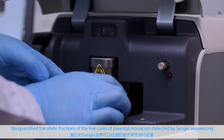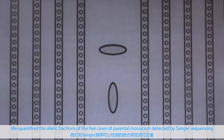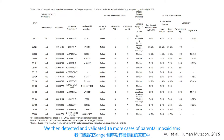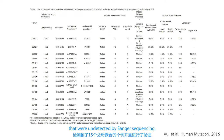We quantified the allelic fraction of the five cases of parental mosaicism detected by Sanger sequencing at 13.3% to 32.6%, respectively. We then detected and validated 15 more cases of parental mosaicism that were undetected by Sanger sequencing. The lowest fraction of mutant alleles detected was 1.1%.